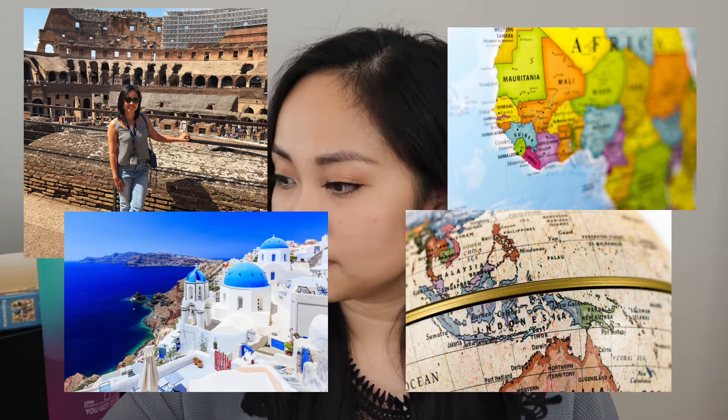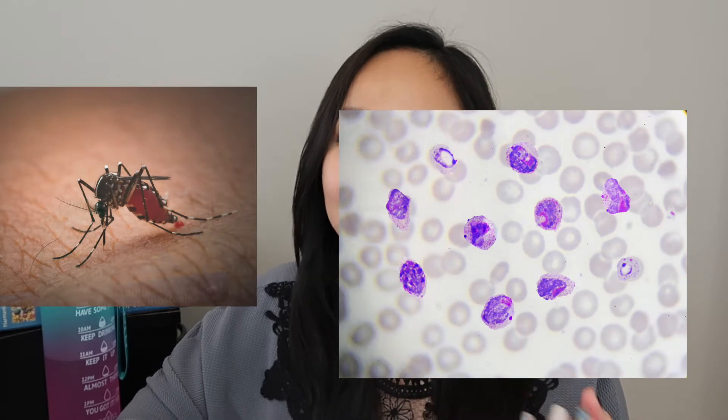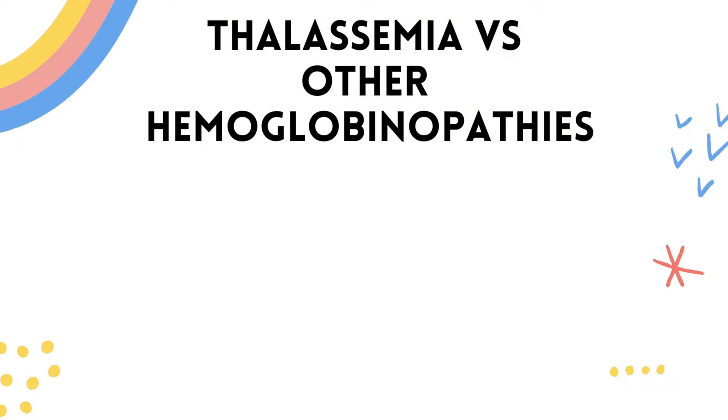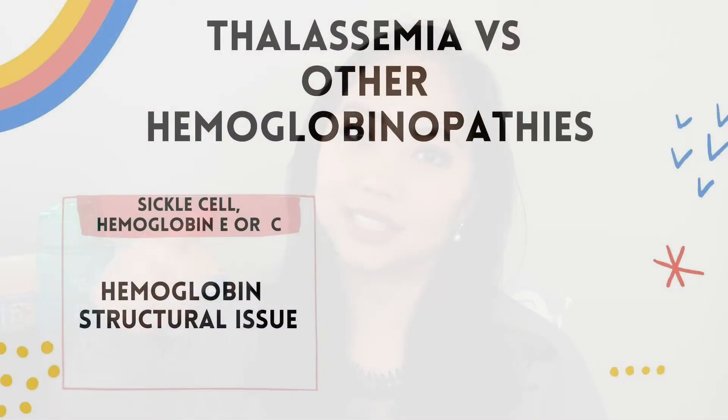Thalassemia is common and present in immigrant populations coming from Italy, Greece, West Africa, and Southeast Asia. The worldwide distribution of thalassemia is quite similar to the distribution of malaria, because thalassemia minor gives you somewhat of a protection from the malaria parasites. The malaria parasites cannot survive in the RBCs of thalassemia patients, so it actually gives them some protection.